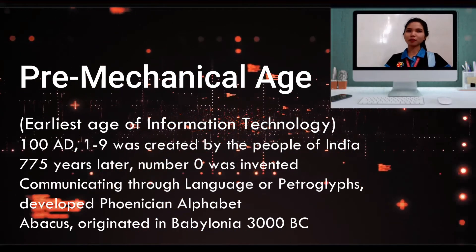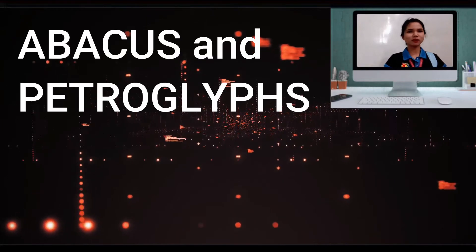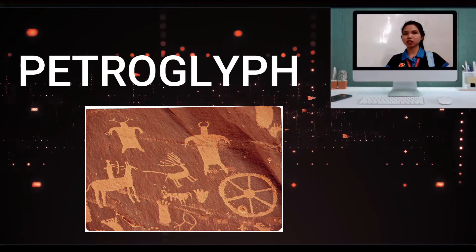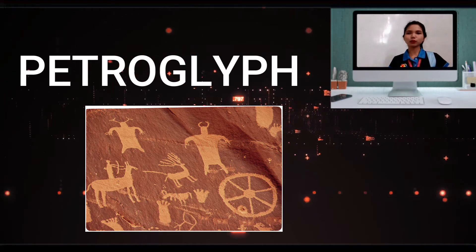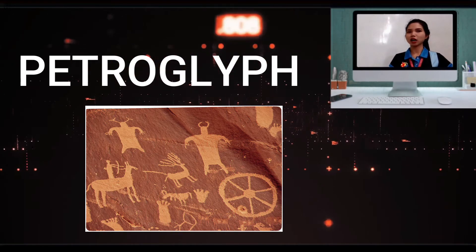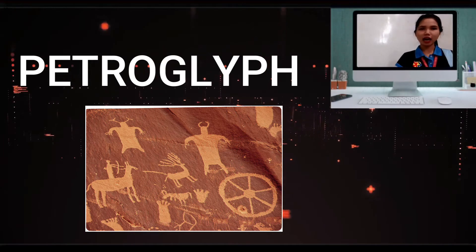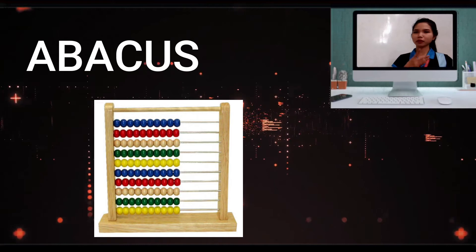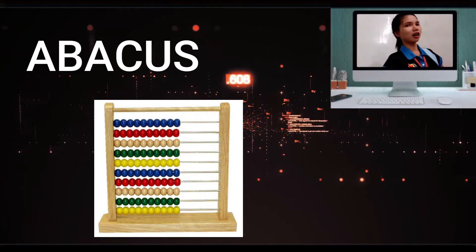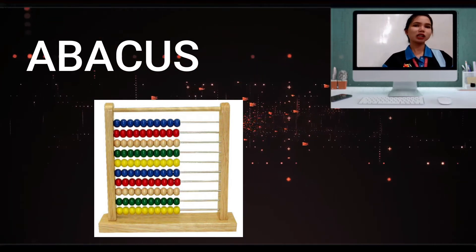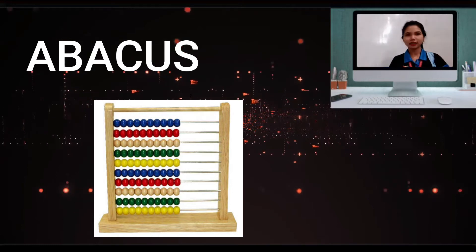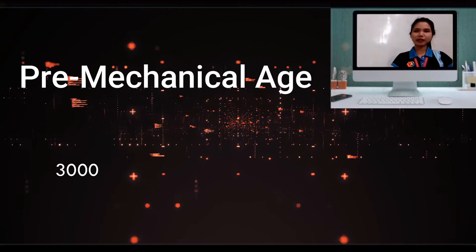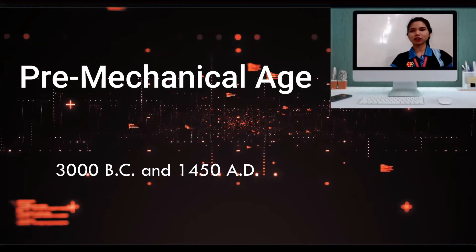Do you know how the Abacus and picture glyphs look like? Take a look at this picture. Picture glyphs are language communicated through carving in a rock, or an inscription. The Abacus is also composed of beads — I'm sure you're familiar with the Abacus from your elementary years.